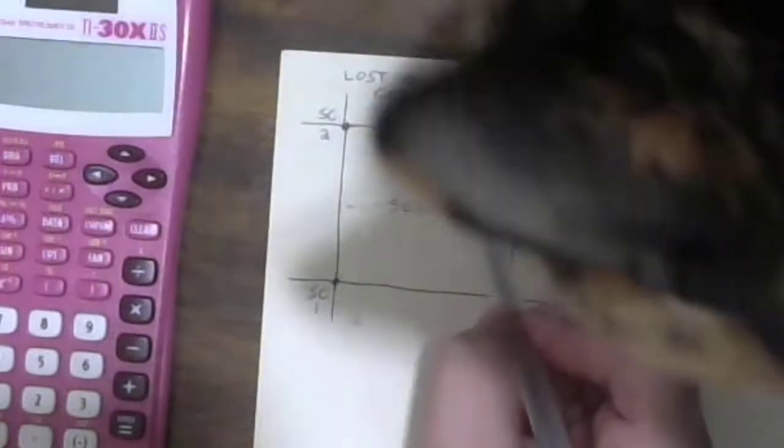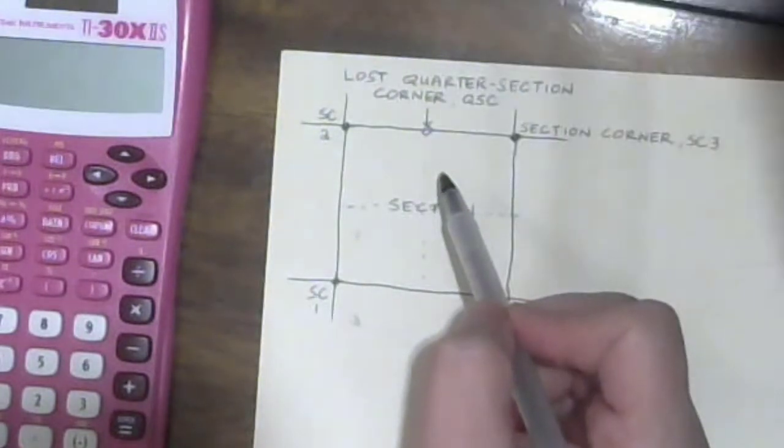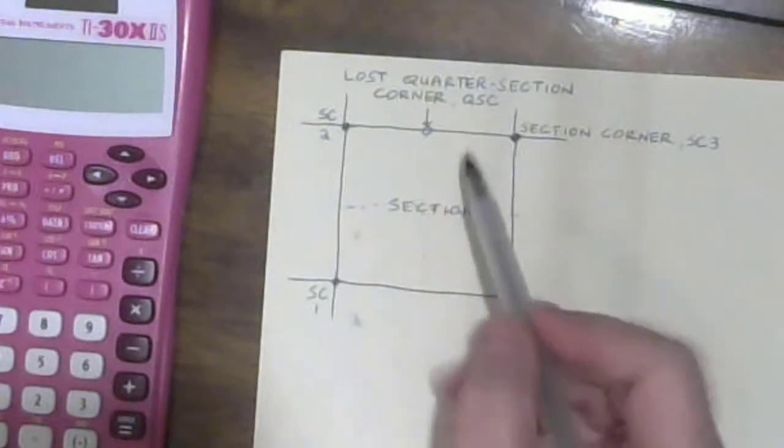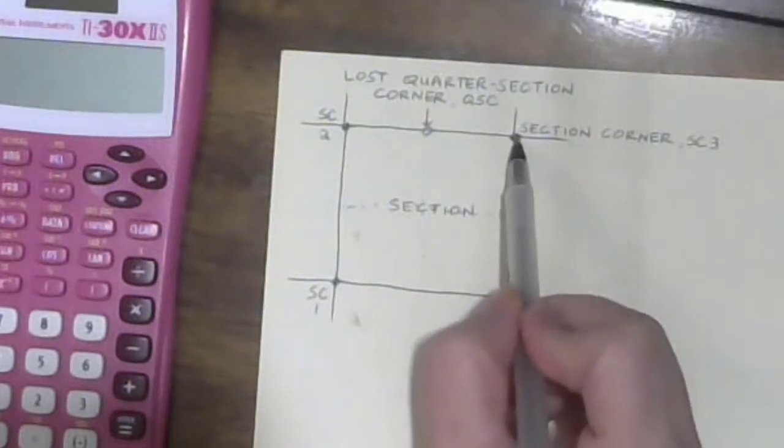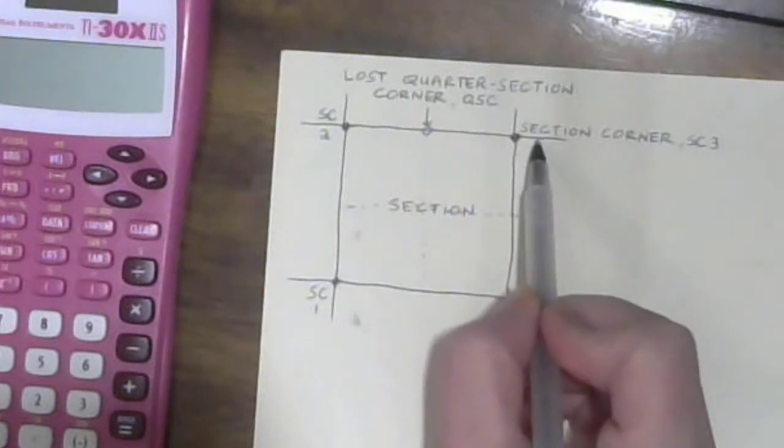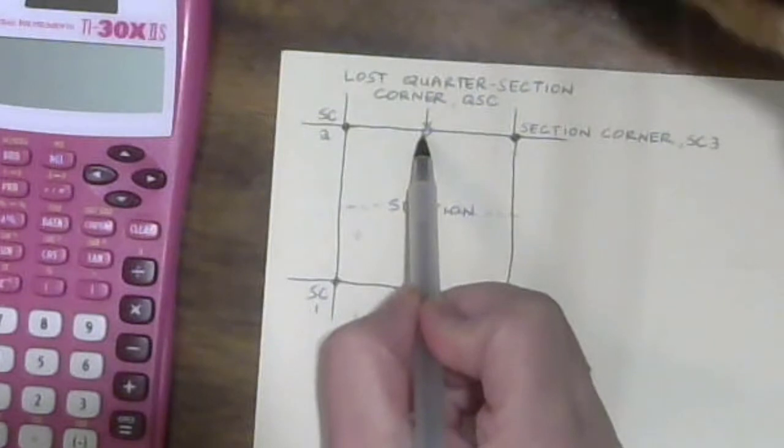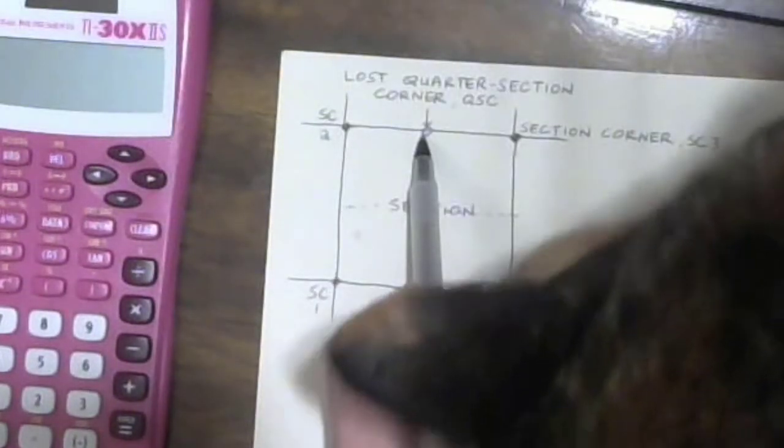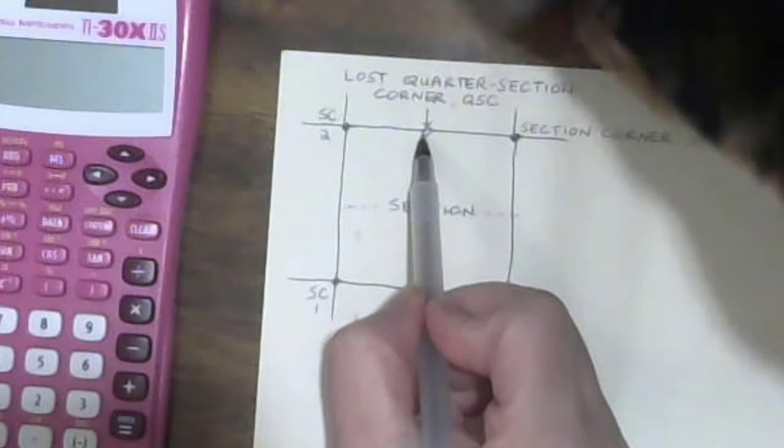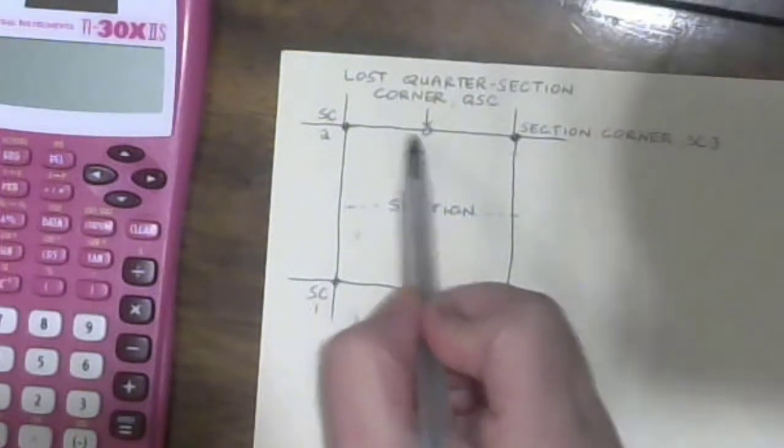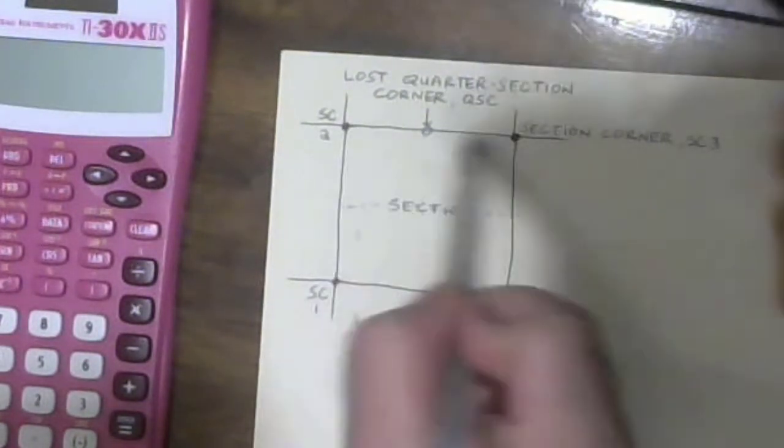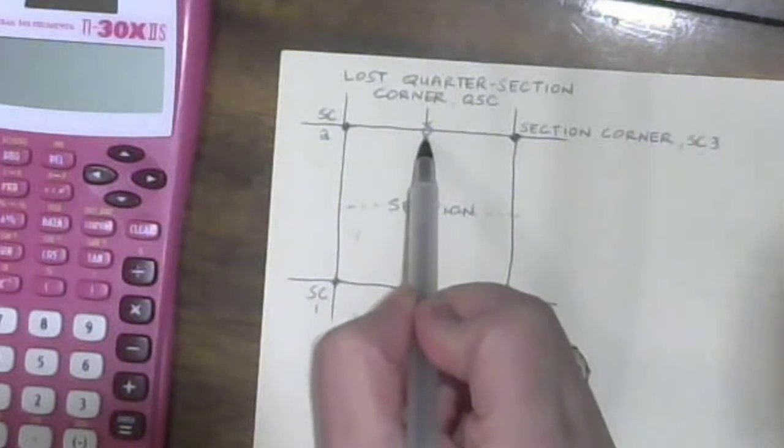Use the measurements we've been given to then use this and then we'll average the northings and get the northing of what's in the middle and we'll average the eastings and get the easting of what is in the middle.